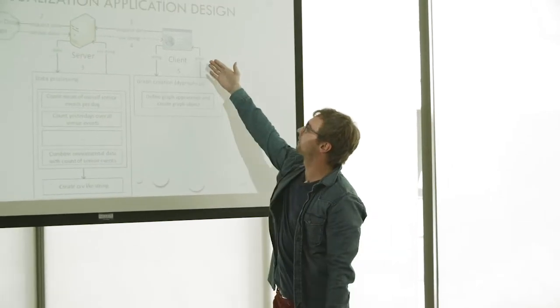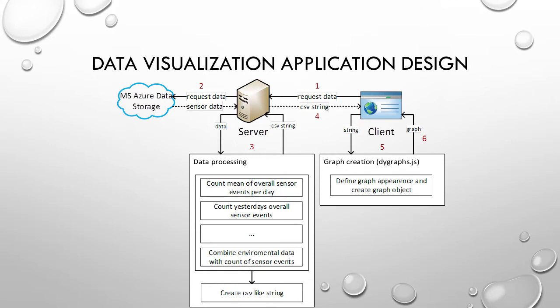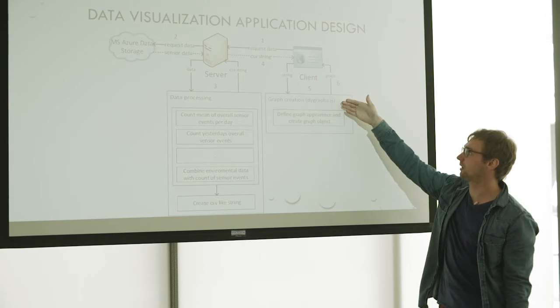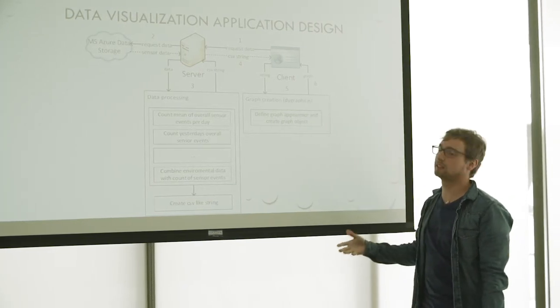A little bit more detailed view is shown here. The client requests data from the server by interacting with my application or just opening the application. The server requests data from the Azure data storage and processes it and creates a CSV-like string. Data processing means calculating different values, for example, the count of yesterday's overall sensor events, and this CSV-like string will be pushed back to the client. And the Dygraphs JavaScript library will visualize the data.